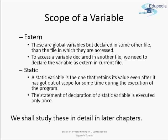Two more ways to define the scope of variables in C are extern and static. Extern is used with global variables, but importantly you can use extern with variables declared as global in some other C file. Using the extern statement at the beginning of your file, you specify extern int x — which asks the compiler to look for the actual declaration of that variable in some other C file, and then use it in your current C file.